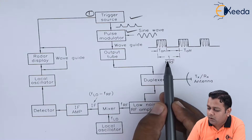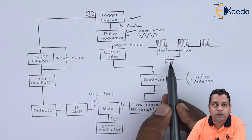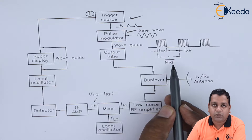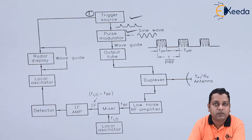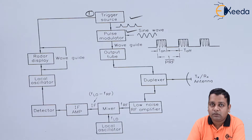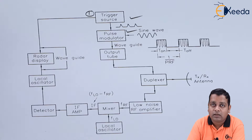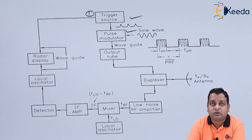For one cycle we have the T-on region and T-off region represented, and this is nothing but 1 over PRF — PRF standing for the pulse repetition frequency. As we saw in the previous video, when one pulse is transmitted from the transmitter section, a sufficient amount of time should be provided so that the pulse is reflected back from the target, received, and detected. After that process there should be the transmission of the second pulse.